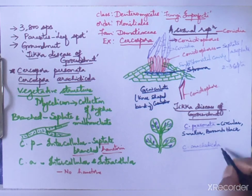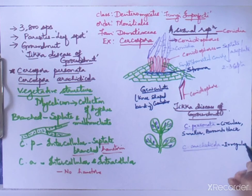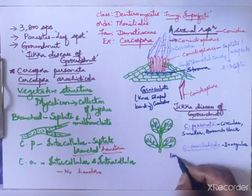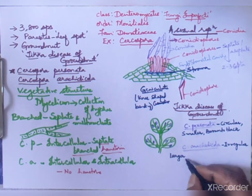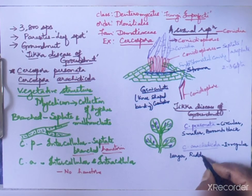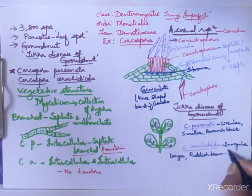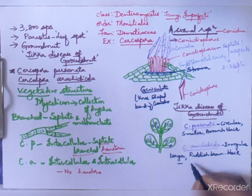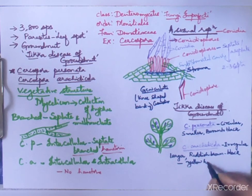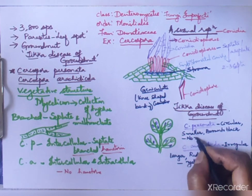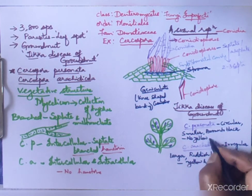Cercospora arachidicola produces spots that are circular to irregular in shape and larger in size. These spots are reddish brown to black in color and are surrounded by a yellow halo — a ring of yellow color surrounding the spot. Cercospora personata spots have no yellow halo.